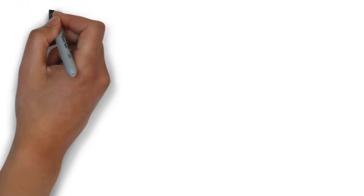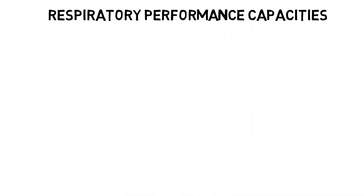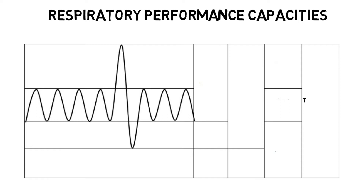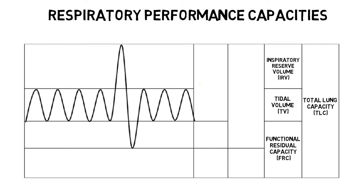We can use some respiratory calculations to monitor an individual's health or performance. Total lung capacity is the lung volume after maximum inspiration. Inspiratory reserve volume is the maximum inspiration at the end of tidal inspiration. Tidal volume is the volume inspired or expired per breath. Functional residual capacity is the volume in the lungs after tidal expiration. Vital capacity is the maximum volume expired after maximum expiration. Residual volume is the volume in the lungs after maximum expiration.